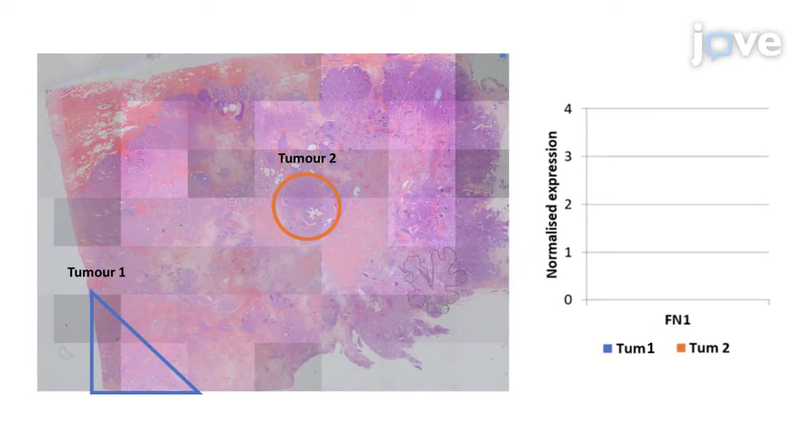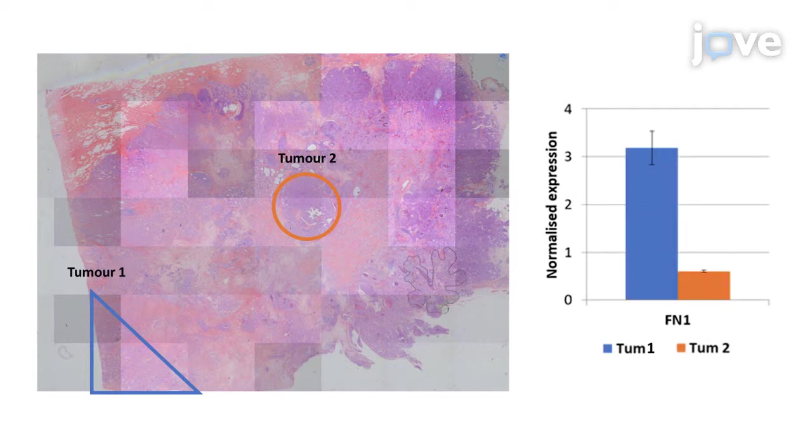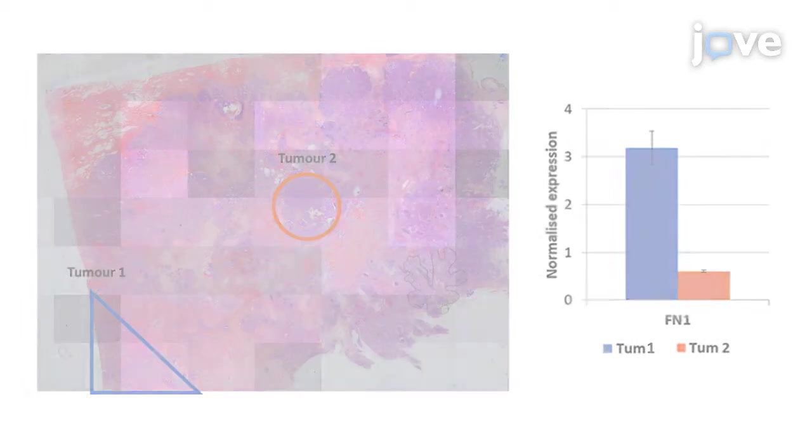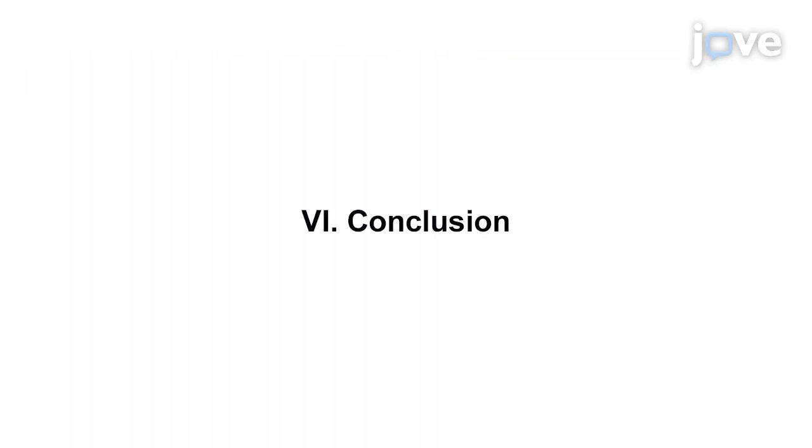Heterogeneity within tumors can be characterized using this method. An ER-positive tumor exhibits spatial differential expression of FN1 within areas showing distinct tumor morphology and mitotic activity. After watching this video, you should have a good understanding on how to measure multiple genes directly from tissue lysates.